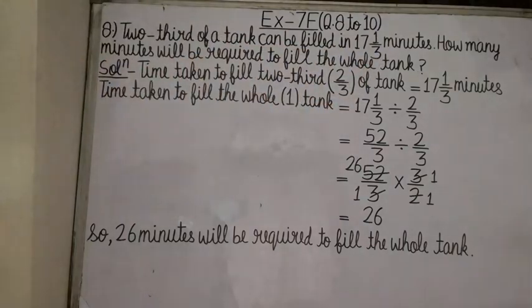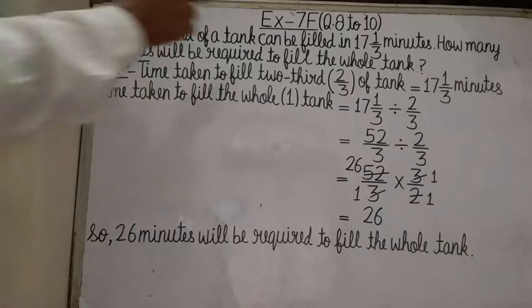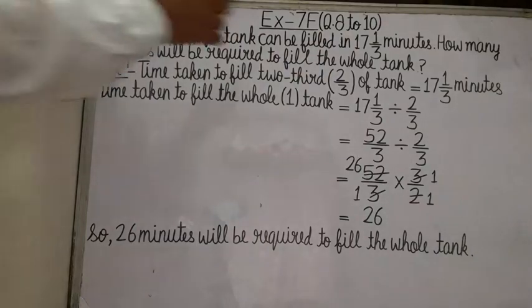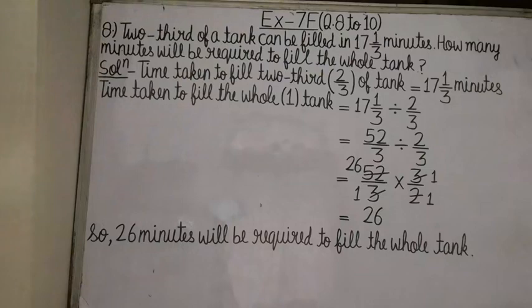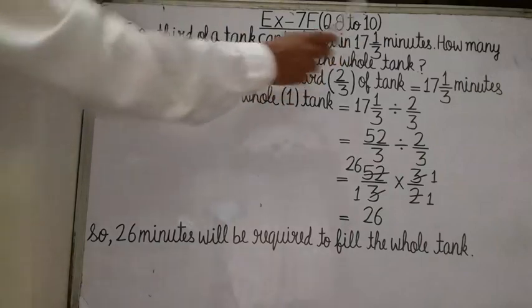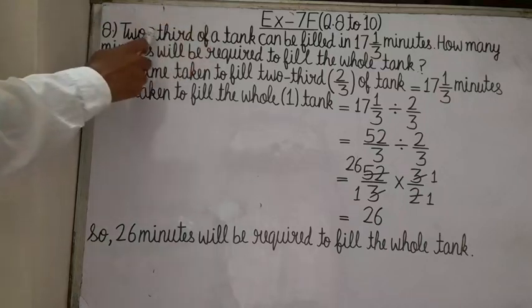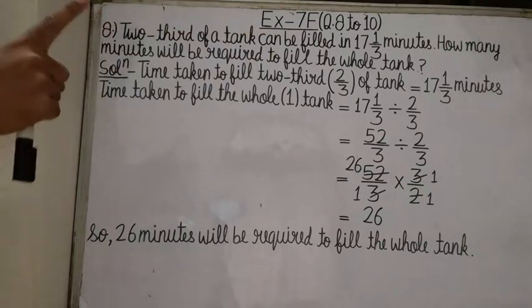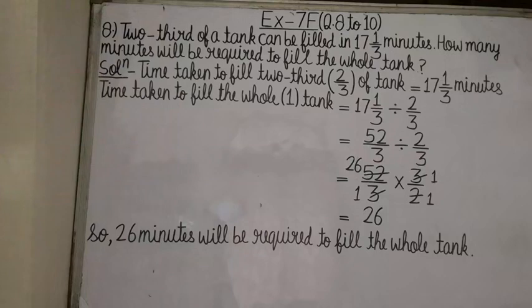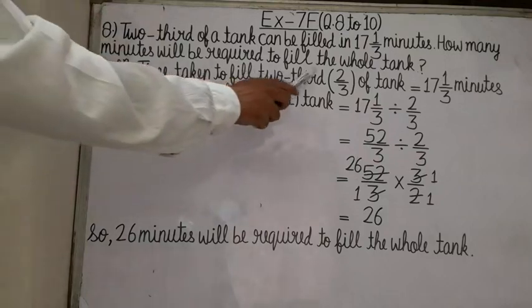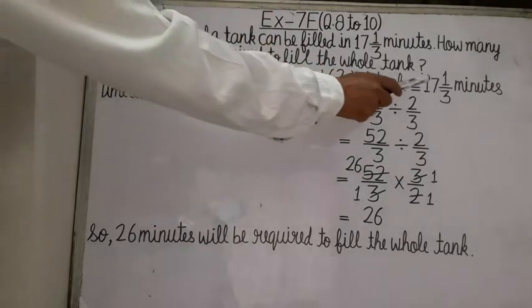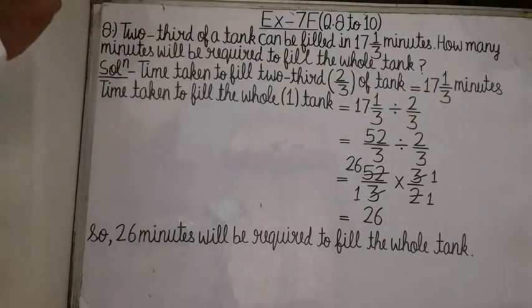So, time taken to fill two-thirds — that is, 2/3 fraction of the tank — is equal to 17 and 1/3 minutes. Time taken to fill the whole tank means one full tank, so we will divide.